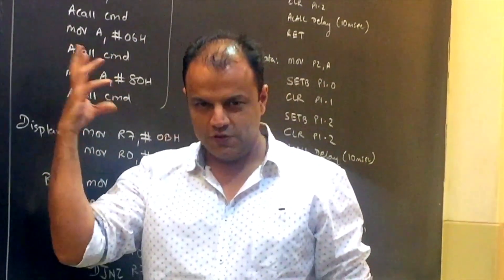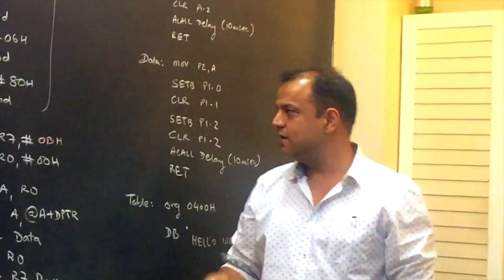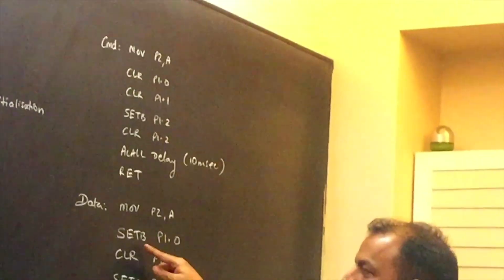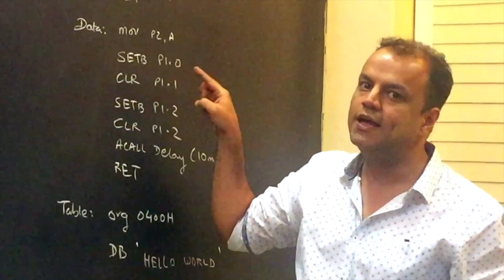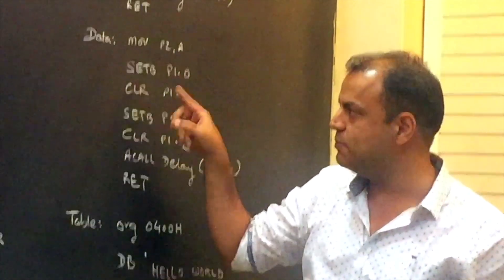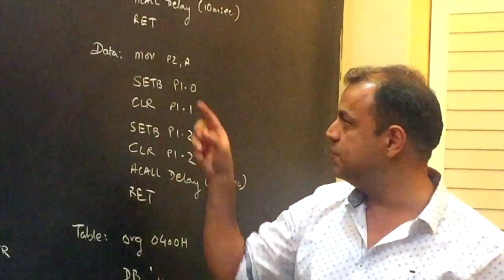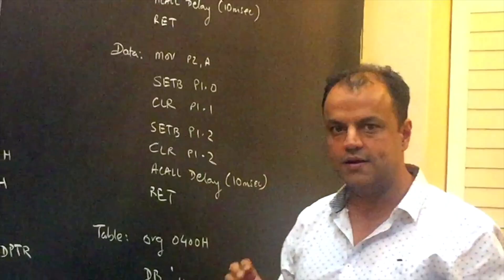Just like we have made a procedure to send a command, we have made another procedure, a subroutine to send data which is identical to this except for this line. This line will be set P1.0 indicating that you are sending a data and not a command. Whatever data you want to send, that means the ASCII code of that alphabet, put it in A register and call this routine, it will send it.